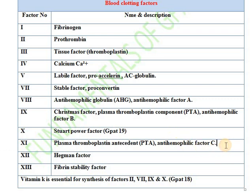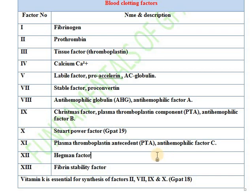Factor number 11 is known as plasma thromboplastin antecedent factor, also known as anti-hemophilic factor C. Factor number 12 is known as Hageman factor. Factor number 13 is known as fibrin stability factor.